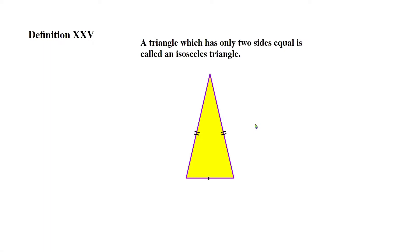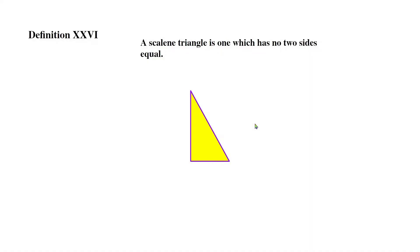Definition 25: a triangle which has only two sides equal is called an isosceles triangle. So if a triangle has two sides equal to each other but the third side is not, the name we give for it is an isosceles triangle.